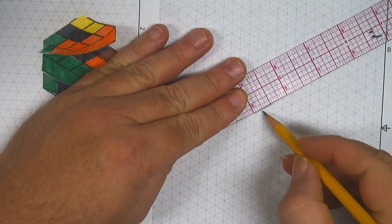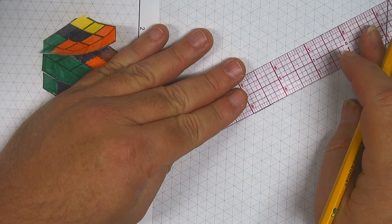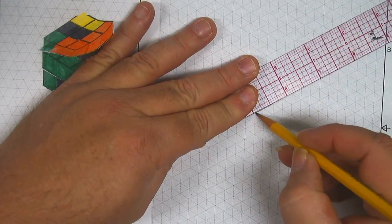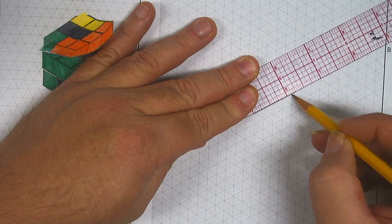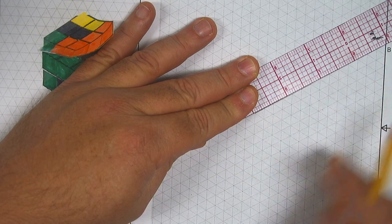I want some really straight lines. So even though the iso paper has lines on it, I'm going to use a ruler to get one, two, three, four, five, six units.